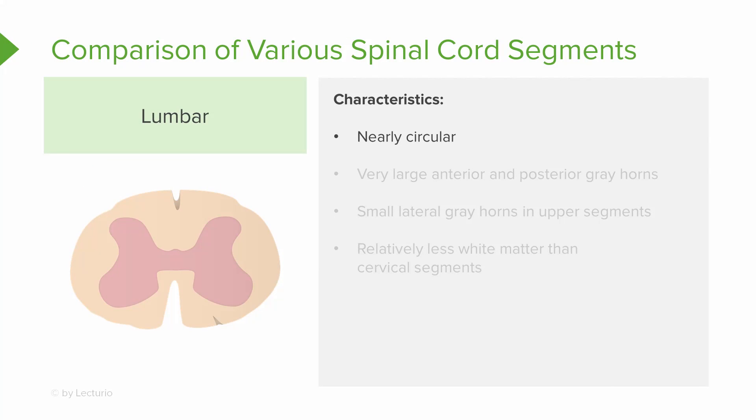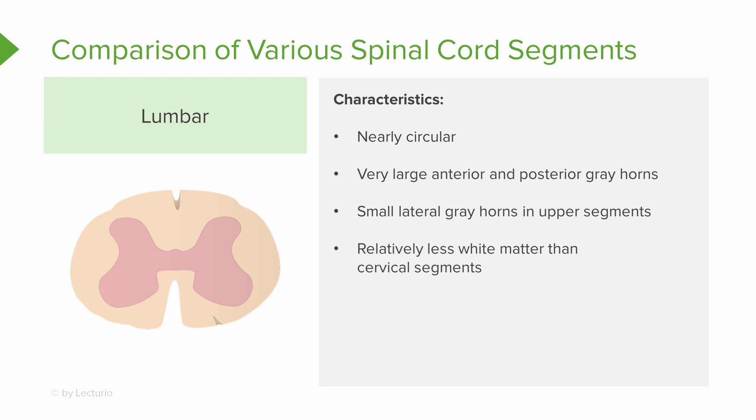The third segment of the spinal cord is the lumbar segment. This segment is nearly circular. It contains a very large anterior and posterior gray horn, and it has a small lateral gray horn in the upper segments. There is relatively less white matter than that of the cervical segments, for the reasons mentioned before.